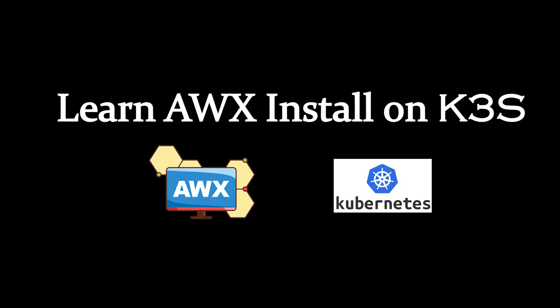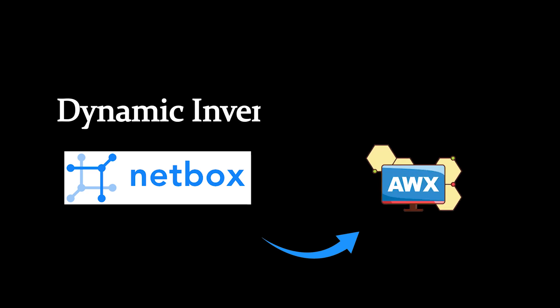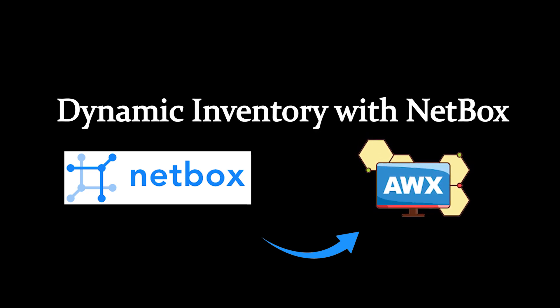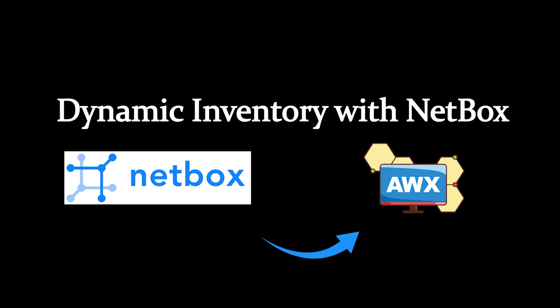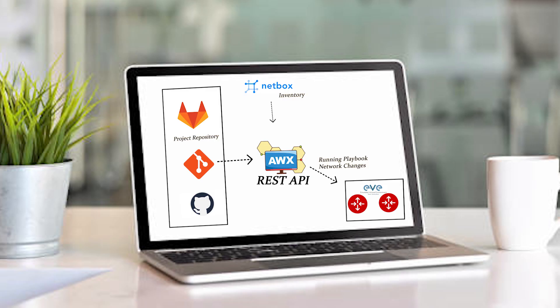By the end of this playlist, you will understand how to get AWX up and running on a Kubernetes environment. Then we are going to understand how to use a source of truth tool like Netbox for dynamic inventory for AWX. Then we will stitch all these tools like GitHub, GitLab, and EVE-NG for simulating the network and execute playbooks through the REST API from AWX. This is going to be interesting with a lot of new stuff, especially for network automation. Let's get going.